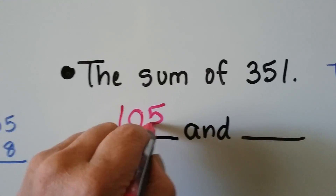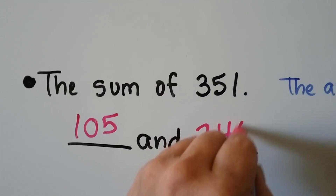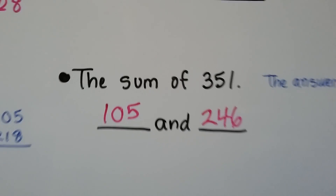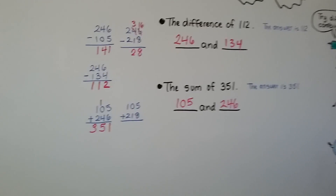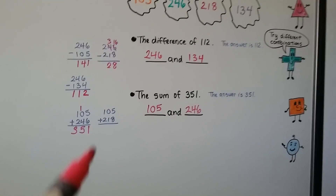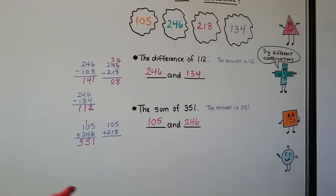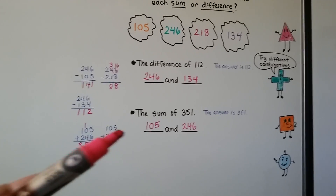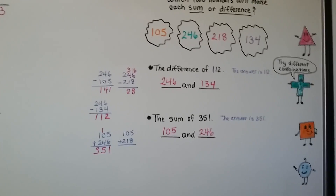So the two numbers that give us a sum of 351 are 105 and 246. The only way to find the answer to this problem was to do guess and check — we had to keep trying different combinations until we got the right answers.